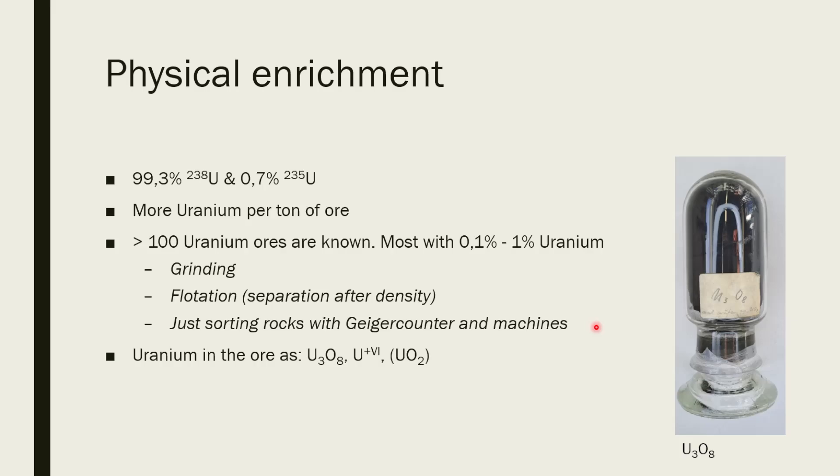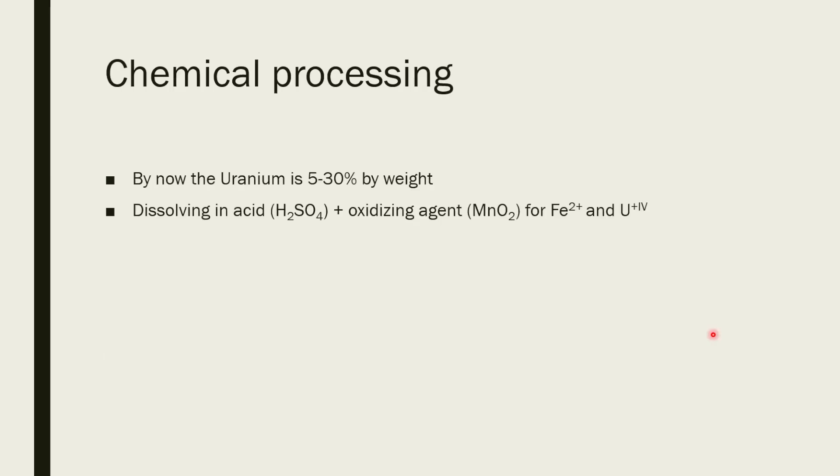But sometimes, for example, pitchblende, which is mostly uranium dioxide, contains the uranium in the oxidation state +4. This is what pure tri-uranium octoxide looks like. It's just a black powder. And when you're done with the physical enrichment, you now have about 5 to 30% uranium by weight, but it's still in the form of rock.